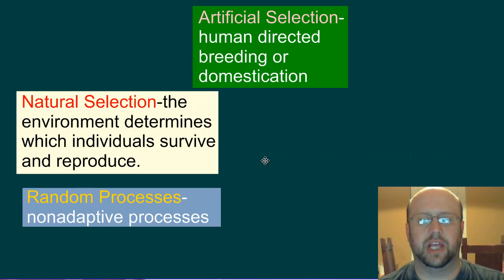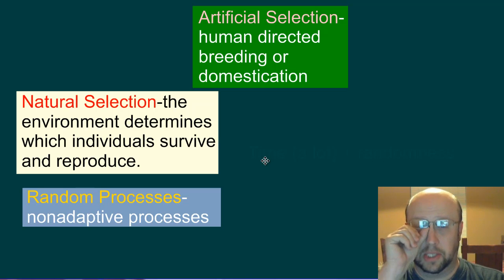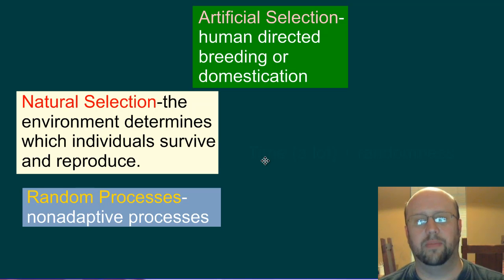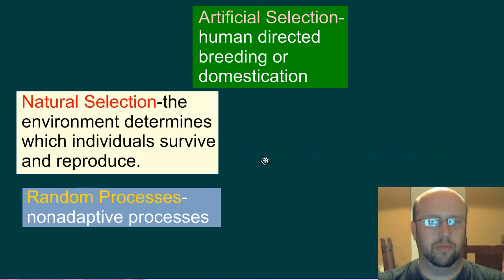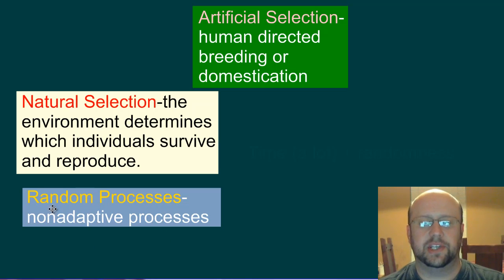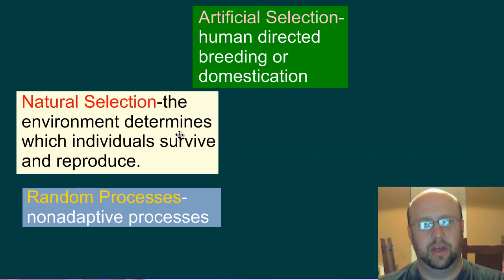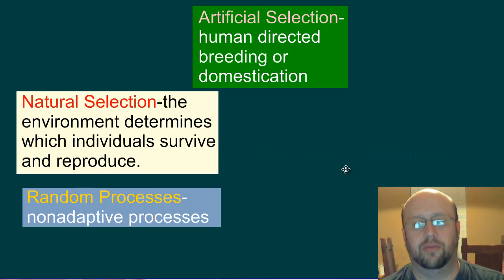Then we've got the big two of what we normally think of as evolution in biology: natural selection and random processes. The idea behind natural selection is that the environment determines which individuals survive and reproduce. Environmental factors come into play, some organisms reproduce and some don't, and that changes the overall population over time. Random processes — or non-adaptive processes — are not necessarily adaptations that are going to help survival, and we'll talk about that in a little bit.